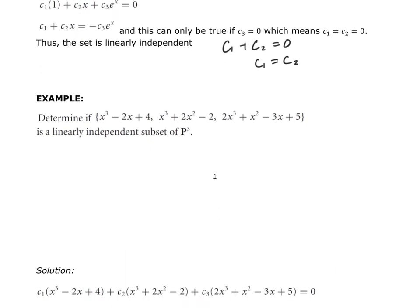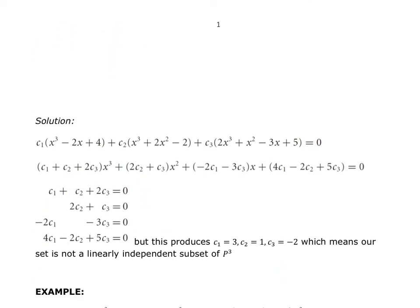Now let's look at an example with a polynomial set. We're asked to determine whether or not three polynomials are linearly independent in the set of polynomials of degree three. We set up the equation with scalar multipliers c1, c2, c3 times each polynomial, set equal to zero, then combine coefficients on the x cubed term, the x squared term, the linear term, and the constants.